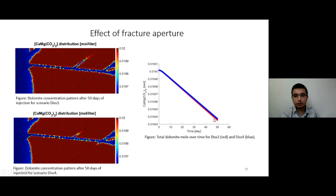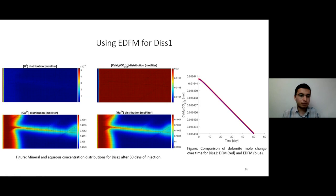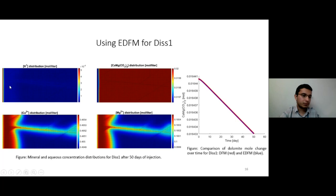I also used the EDFM model to model the fractures and compared the results of the two models together. I used one scenario to compare the results. The output of the EDFM simulation shows the hydrogen concentration — because in this case the injection rate is very low, dissolution has occurred just in the vicinity of the inlet and has not reached the fractures at all. The comparison of EDFM and DFM models shows that the results are quite similar.